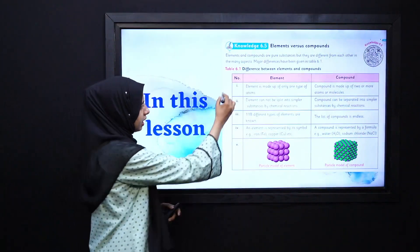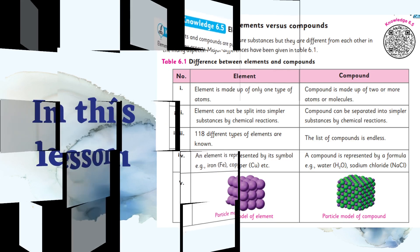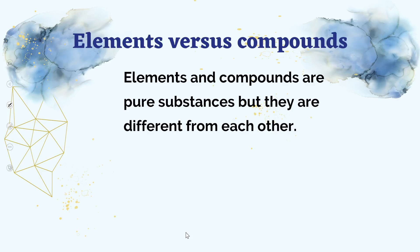So dear students, aaj ke lecture ke andar hum inhi differences ko discuss karenge aur kuch examples ke saath discuss karenge. Toh element aur compound, agar hum dono ki substances ki baat karen, toh both are pure substances. Elements consist of same type of atoms whereas compounds consist of same type of units.